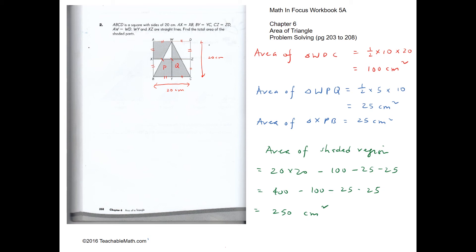To find the shaded region, subtract the unshaded regions from the total. Area of triangle WDC: base is 10 and height is 20, giving 100 cm squared. Area of triangle WPQ: half times 5 times 10, which is 25 cm squared.